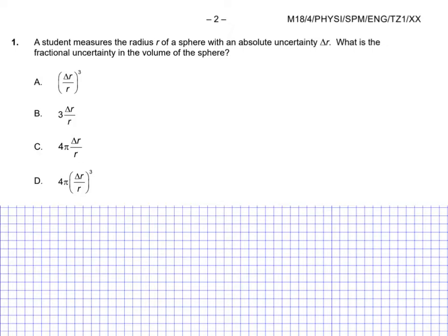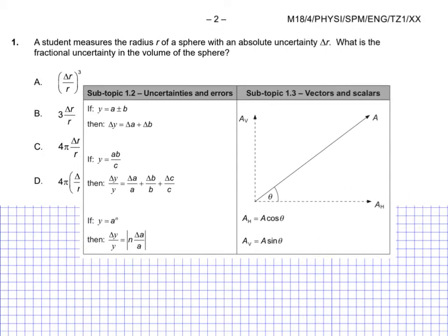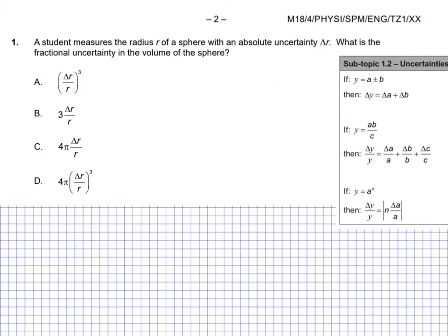Question one here, a student measures the radius r of a sphere with an absolute uncertainty of delta r. What is the fractional uncertainty in the volume of the sphere? So let's have our data booklet in front of us. This is the snippet from the uncertainties and error sections. I'm just going to scooch that over here.